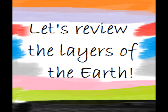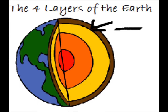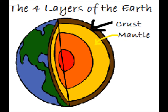Let's review the layers of the earth. Feel free to call out the answer if you know it. The first layer is the crust. It is where we live and is composed of land and water. Under that is the mantle. Remember, heat and pressure has increased so it's really hot. This is typically the source of magma and lava.